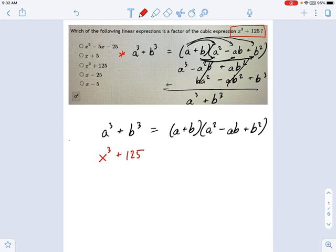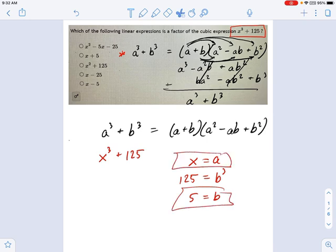Well, as I look at this, I realize, hey, x is just equal to a. And furthermore, 125 is equal to b cubed. So take the cubed root of each side. You're going to find out that 5 equals b. Okay, these are the important things. x equals a and b equals 5.